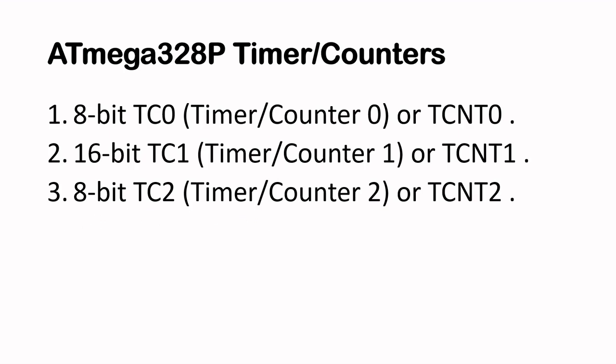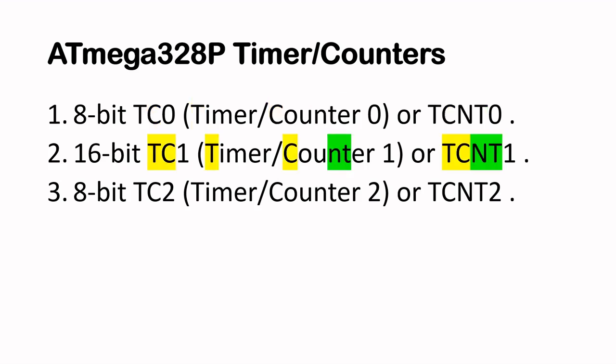The ATmega328 has three timer counters. The first one is an 8-bit timer counter 0, or TCNT0. The second one is a 16-bit TC1, or timer counter 1, or TCNT1. And the third timer counter is an 8-bit timer counter TC2, or TCNT2.